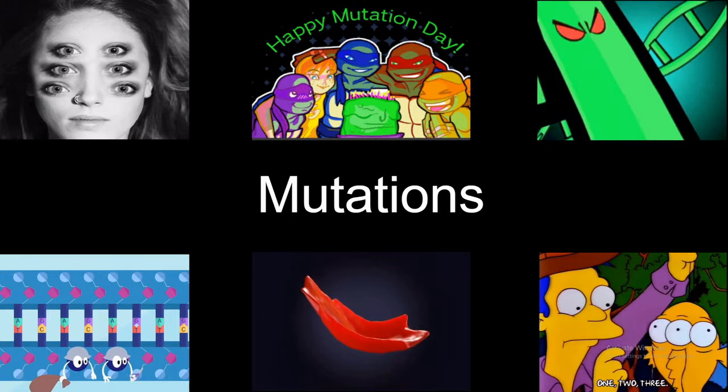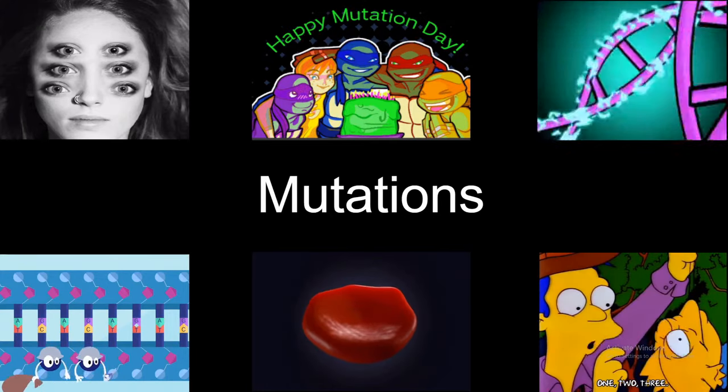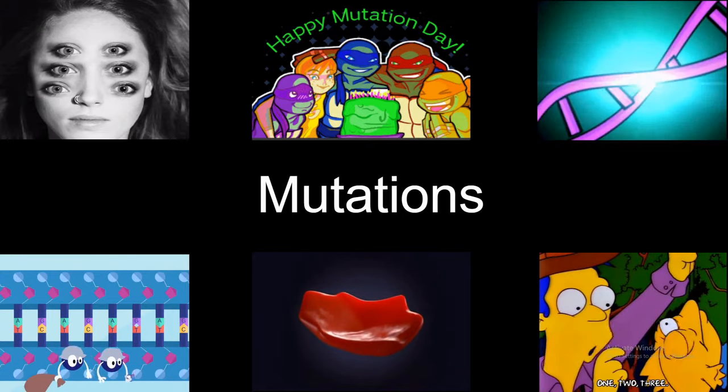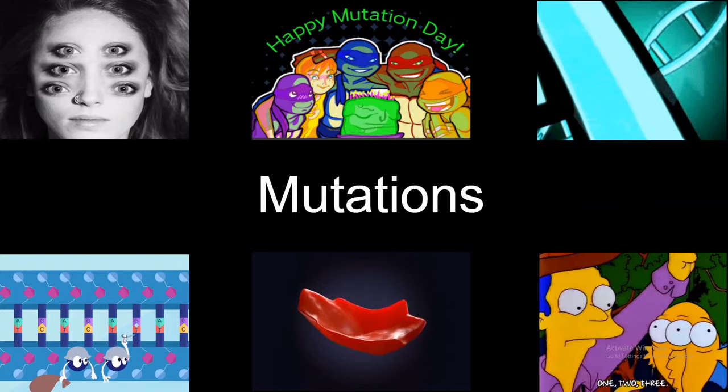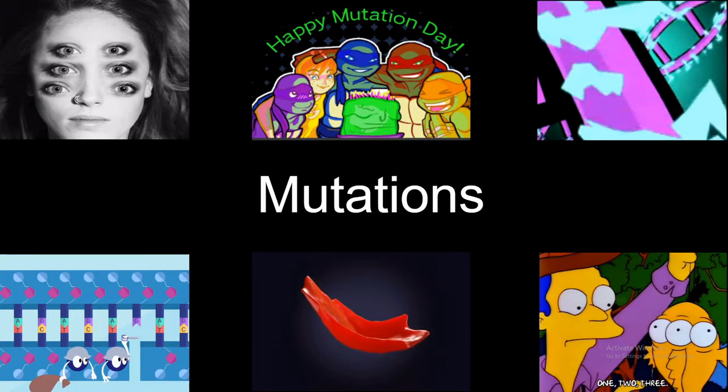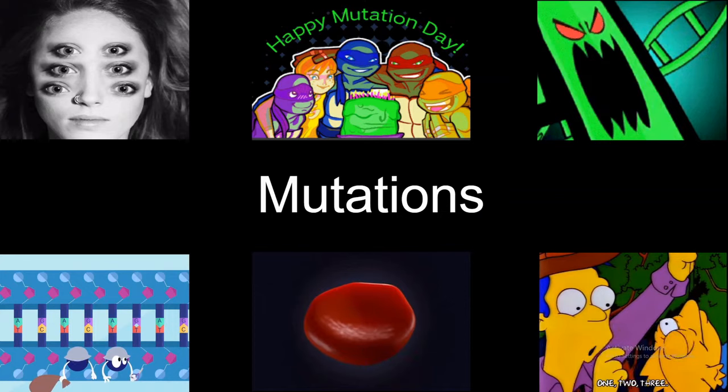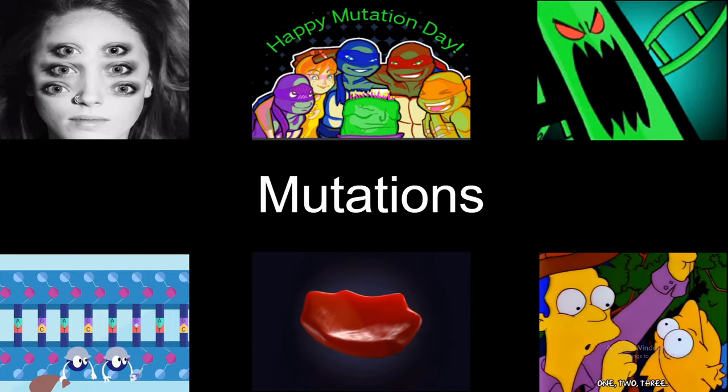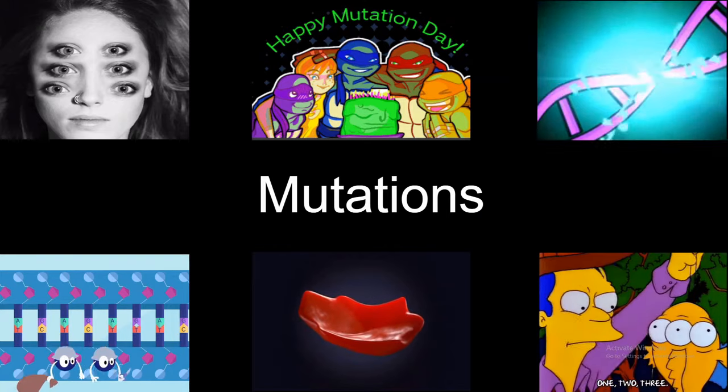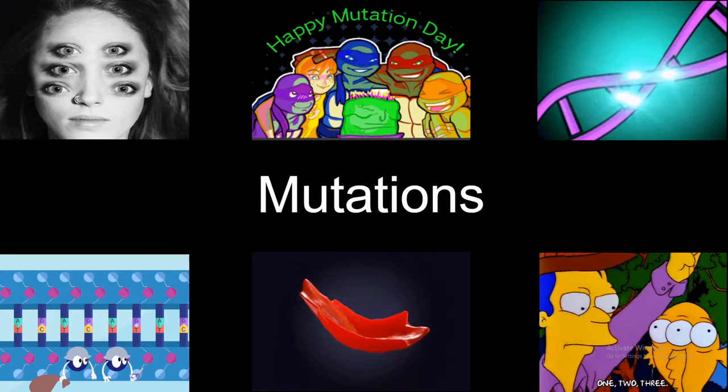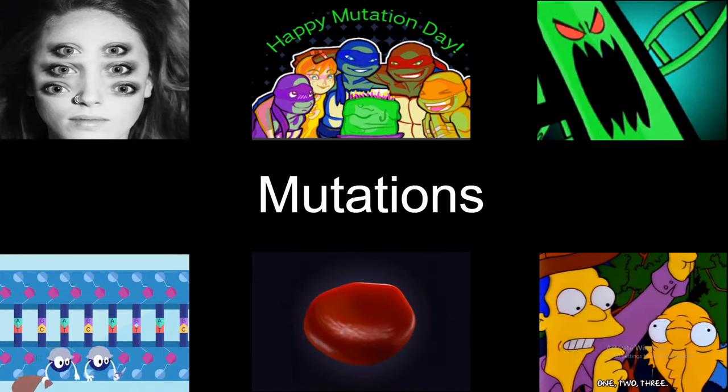But they do have something in common. Mutations gave them an advantage. Is this always the case? What about a mutation, such as the red blood cell below, that changes the shape of your red blood cell from disc shape to flat and sticky? This is also known as sickle cell anemia. We will discuss this mutation and others in this video.